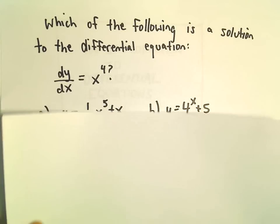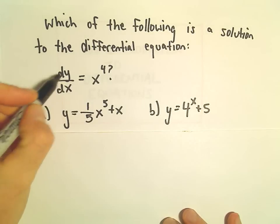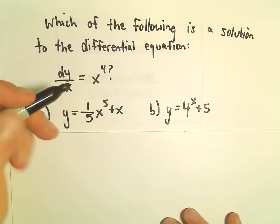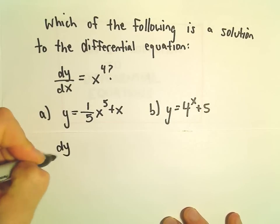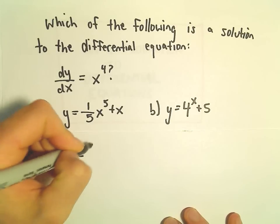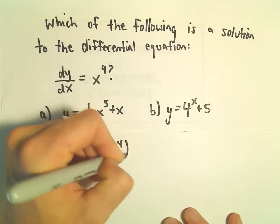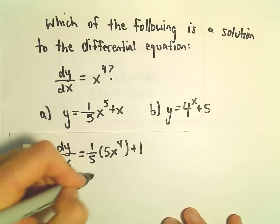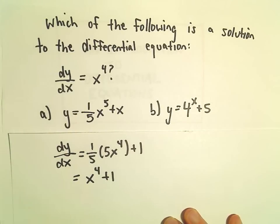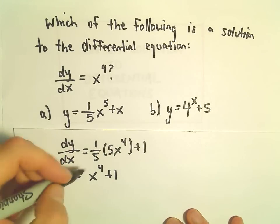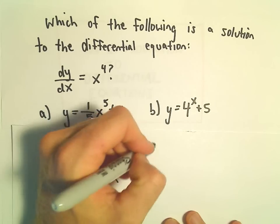Maybe there's more than one solution. All this really says is which derivative gives us just x to the fourth. So we can check part a. dy/dx here: we'll get 1/5 times 5x to the fourth plus 1, which leaves us with x to the fourth plus 1. But that's certainly not just x to the fourth, so part a is not our solution.